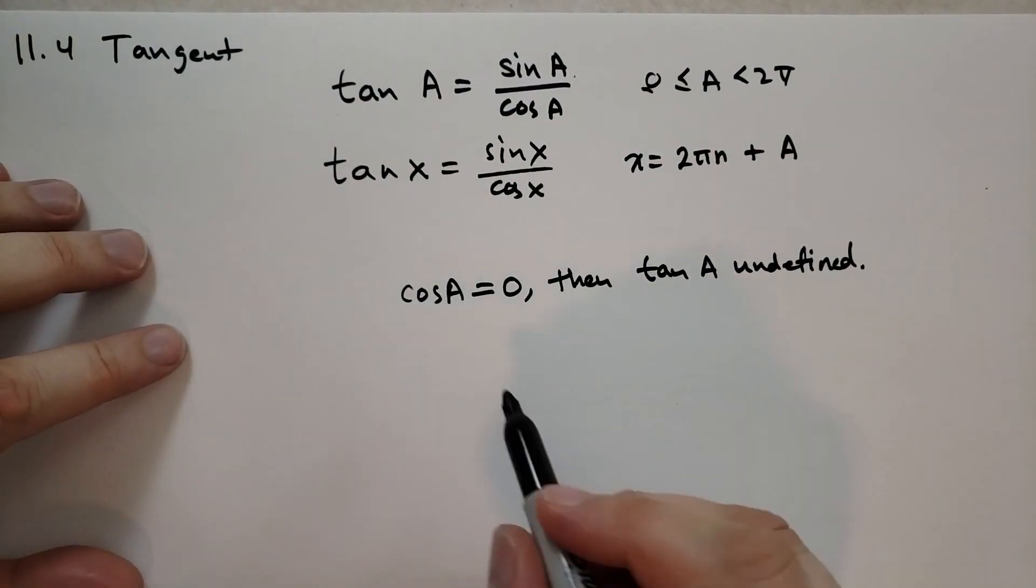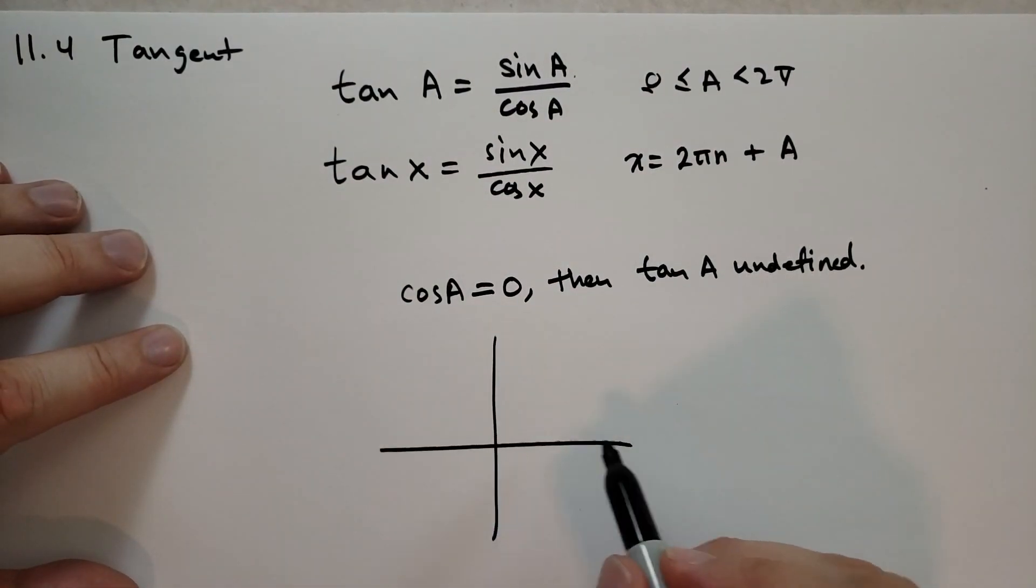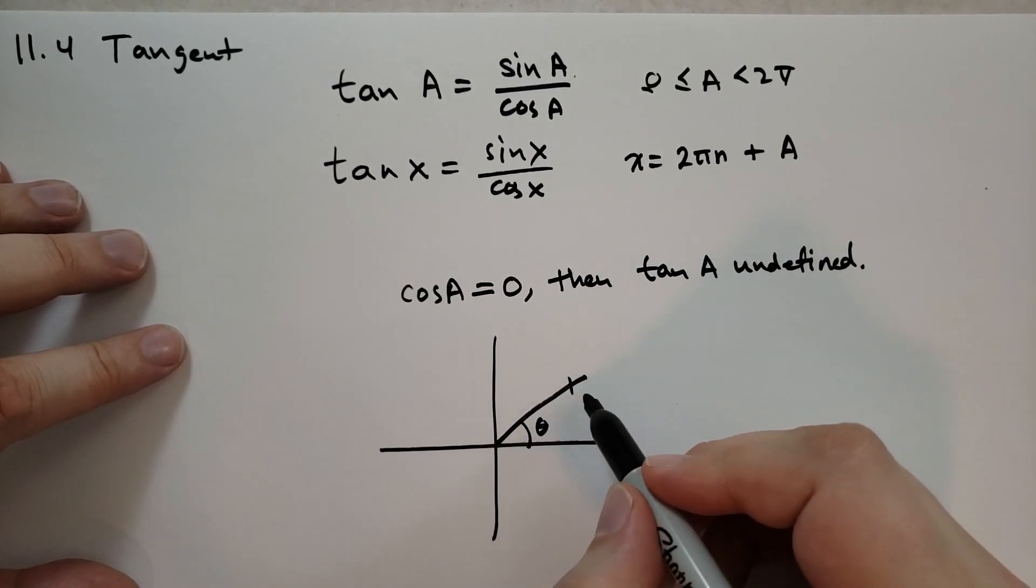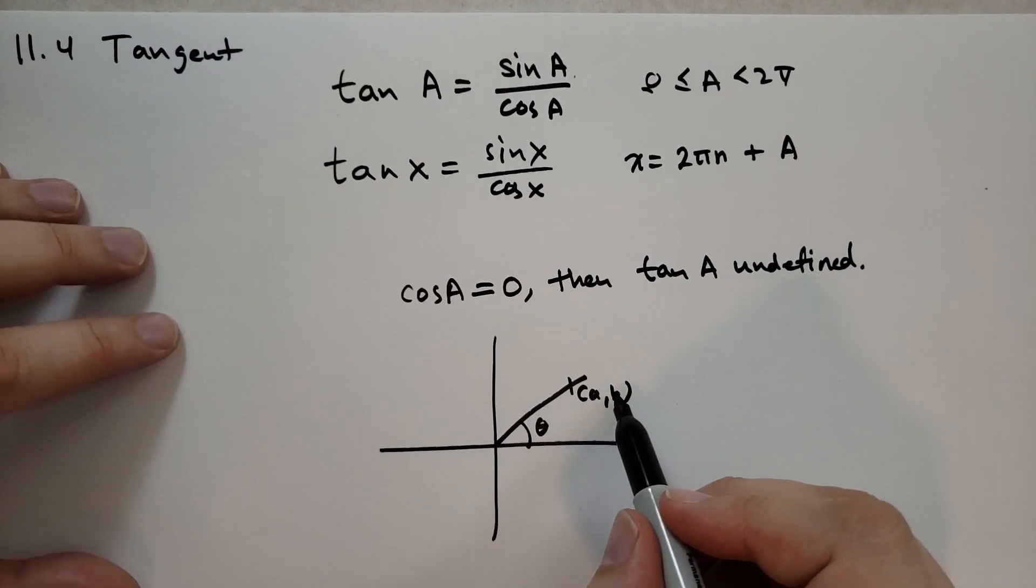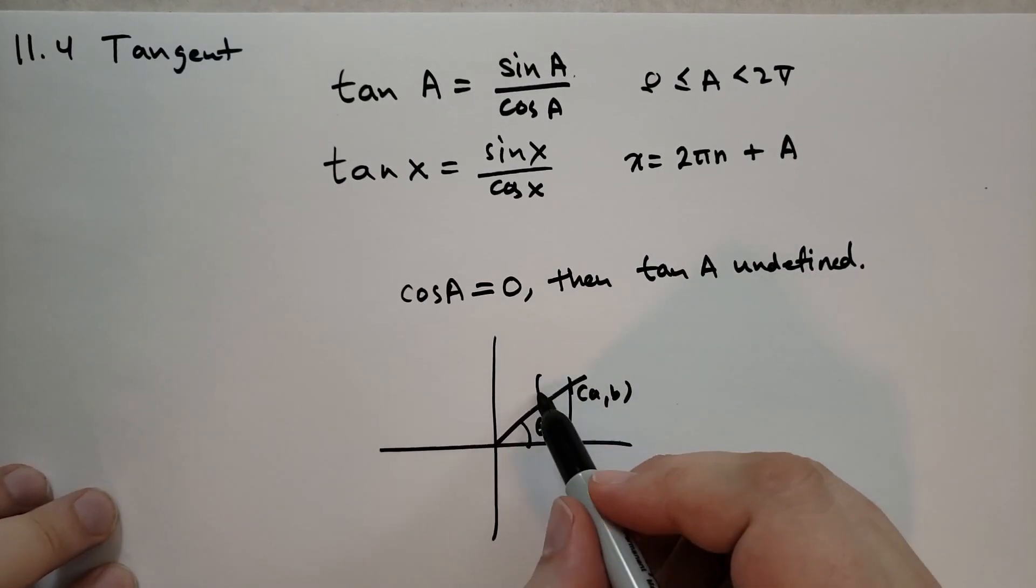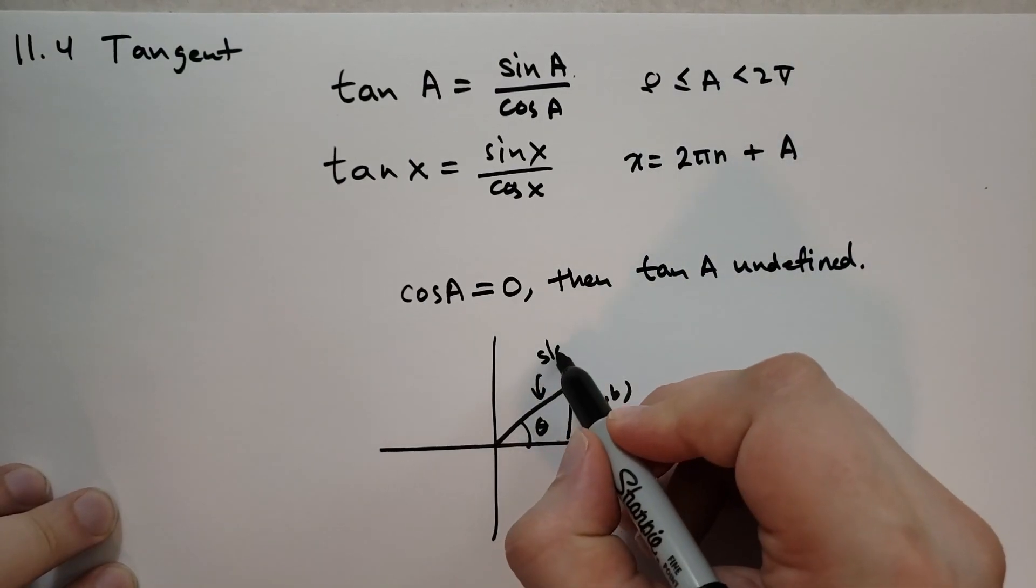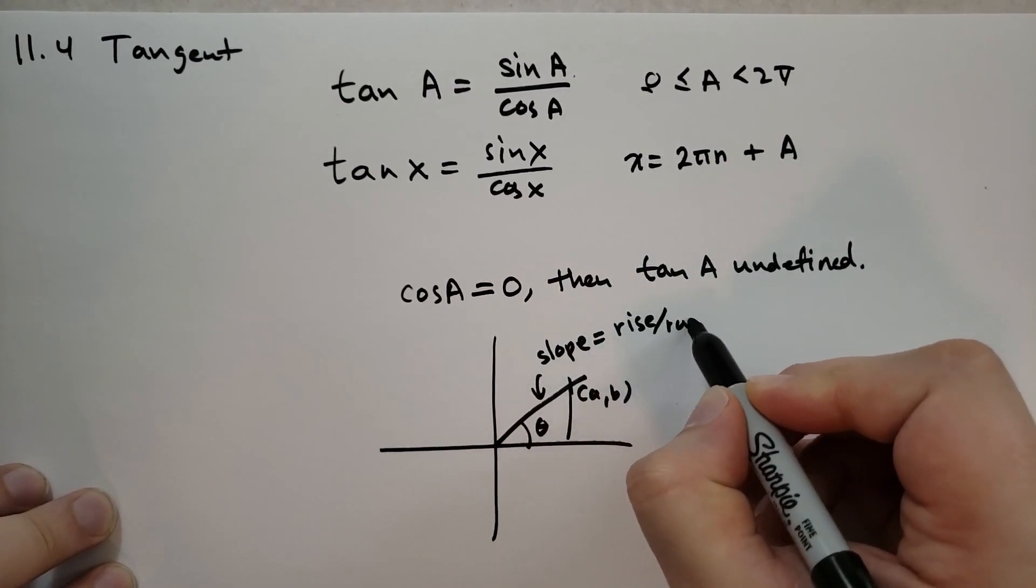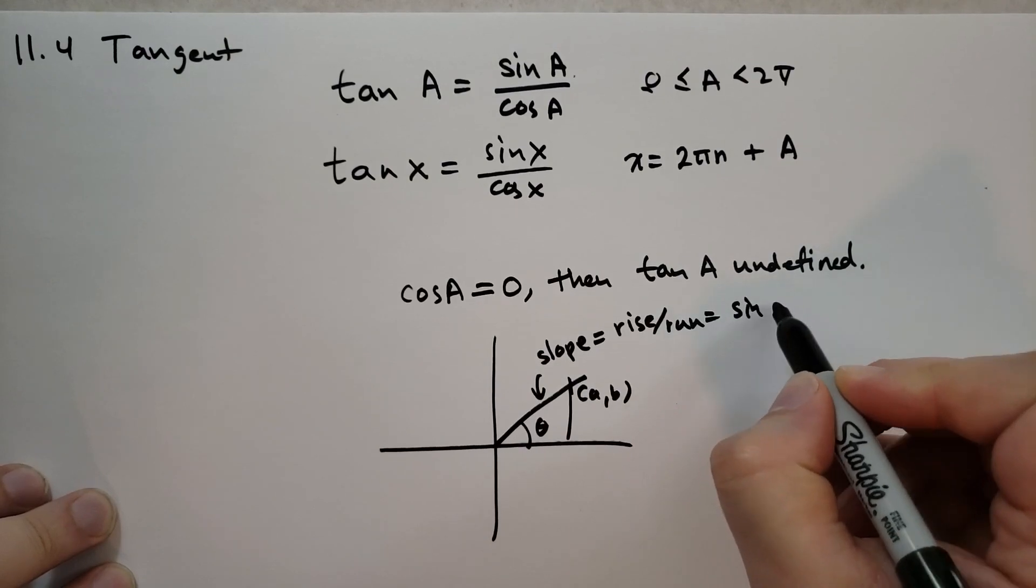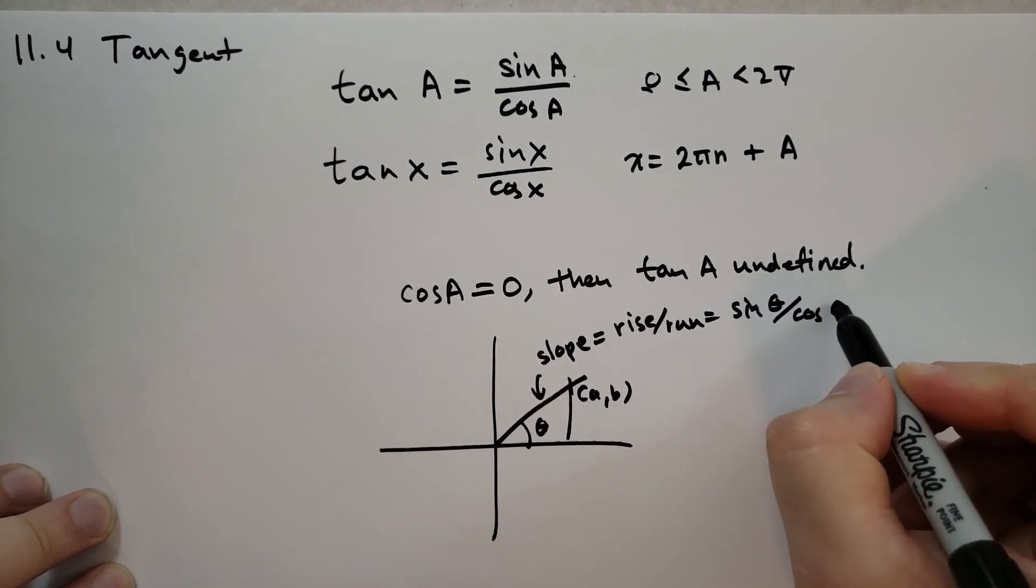Why do we call it the tangent? Well, if you take the coordinate axes and you draw an angle here, theta, and you note that the position A comma B there, which is the cosine of theta and the sine of theta, then the slope of this angle, the slope of this line is equal to the rise over the run, which is the same as the sine of that theta divided by the cosine of that theta.